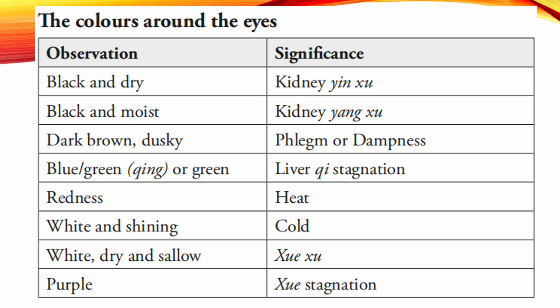Summary of colors around the eyes: black and dry means kidney yin deficiency; black and moist means kidney yang deficiency; dark brown and dusky means phlegm or dampness; blue-green or green means liver qi stagnation; redness means heat; white and shining means cold; white, dry, and sallow means blood deficiency; purple means blood stagnation.